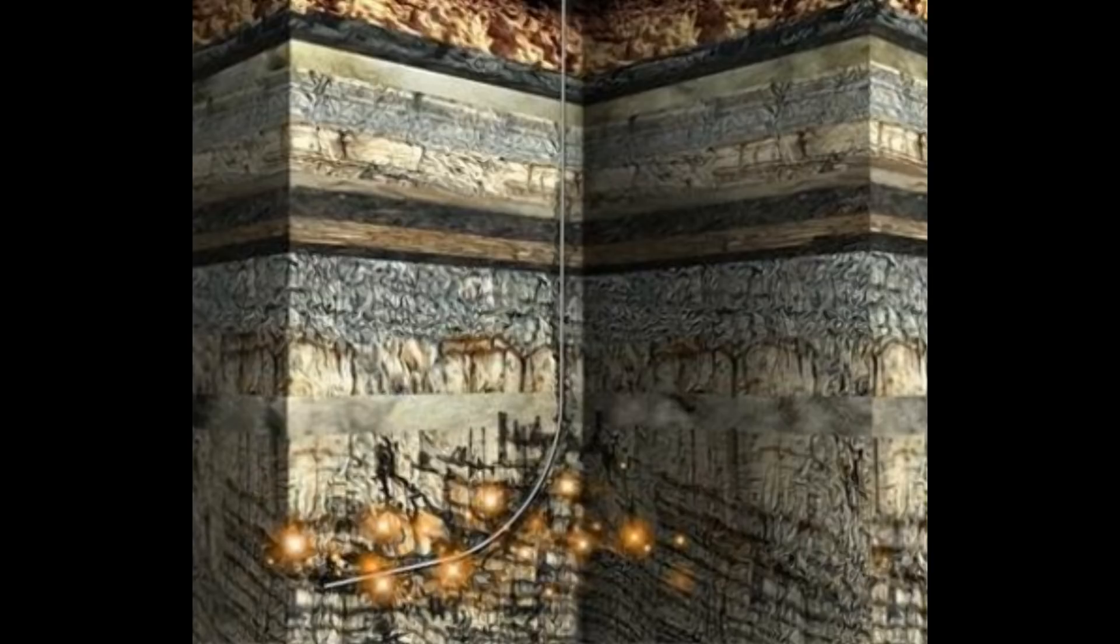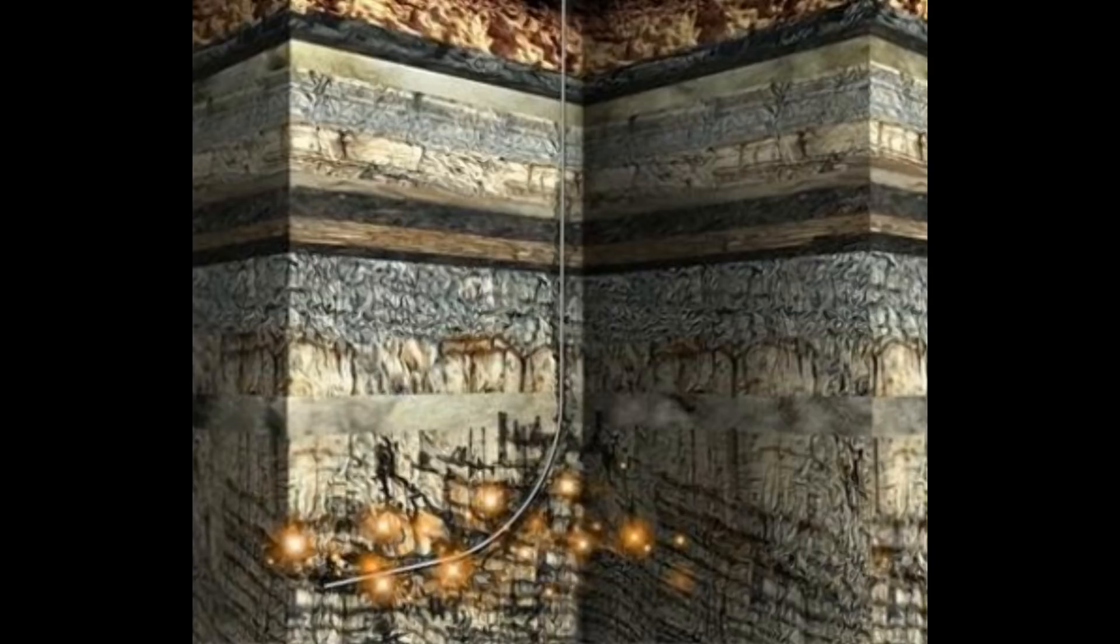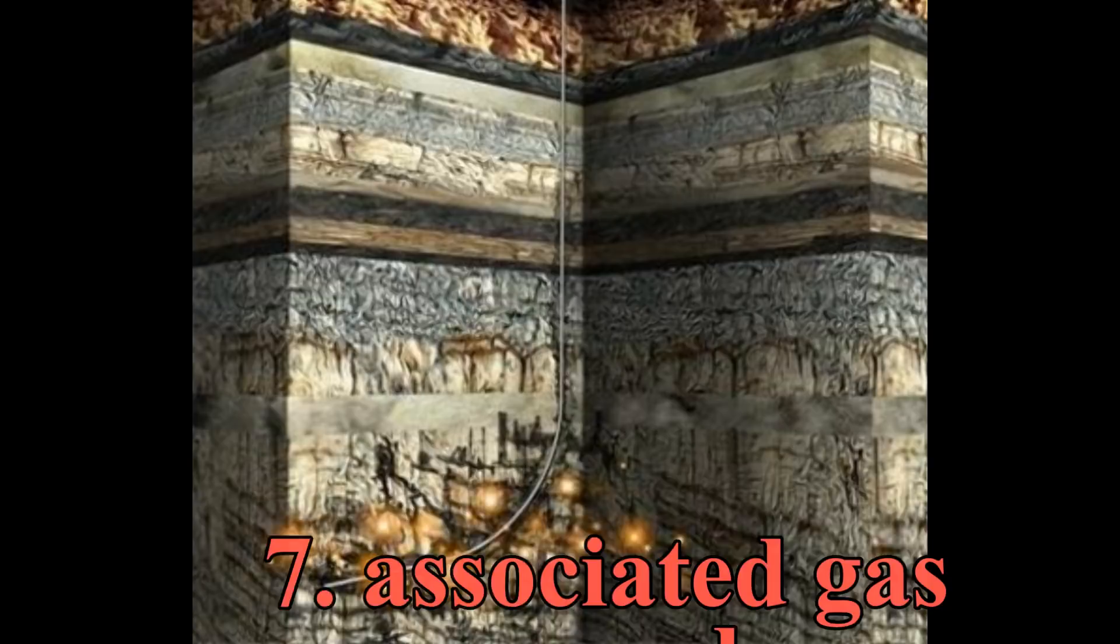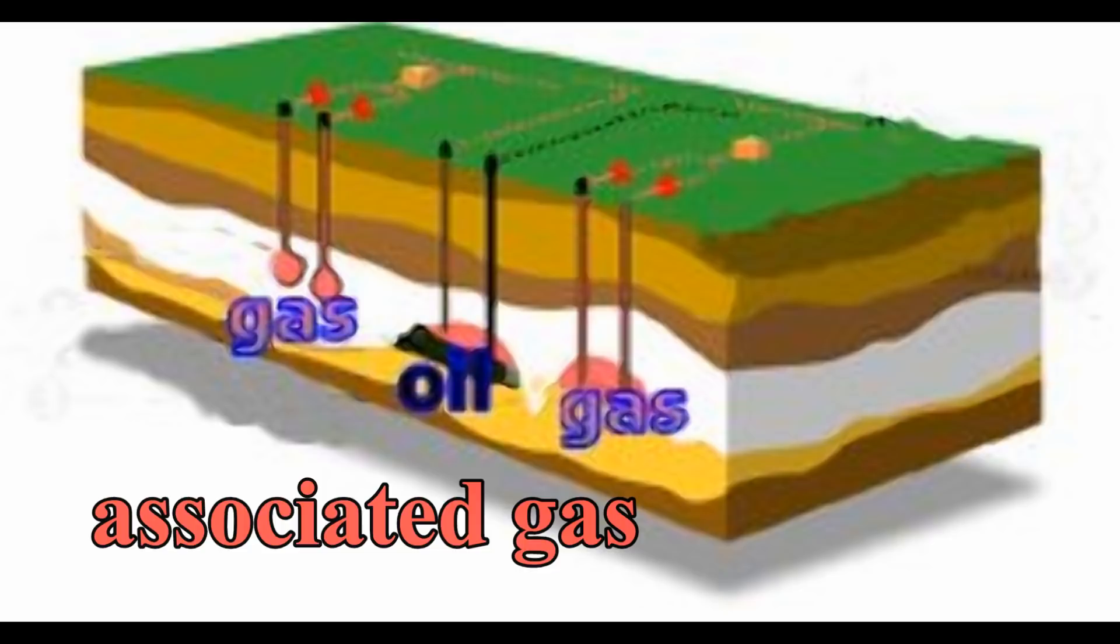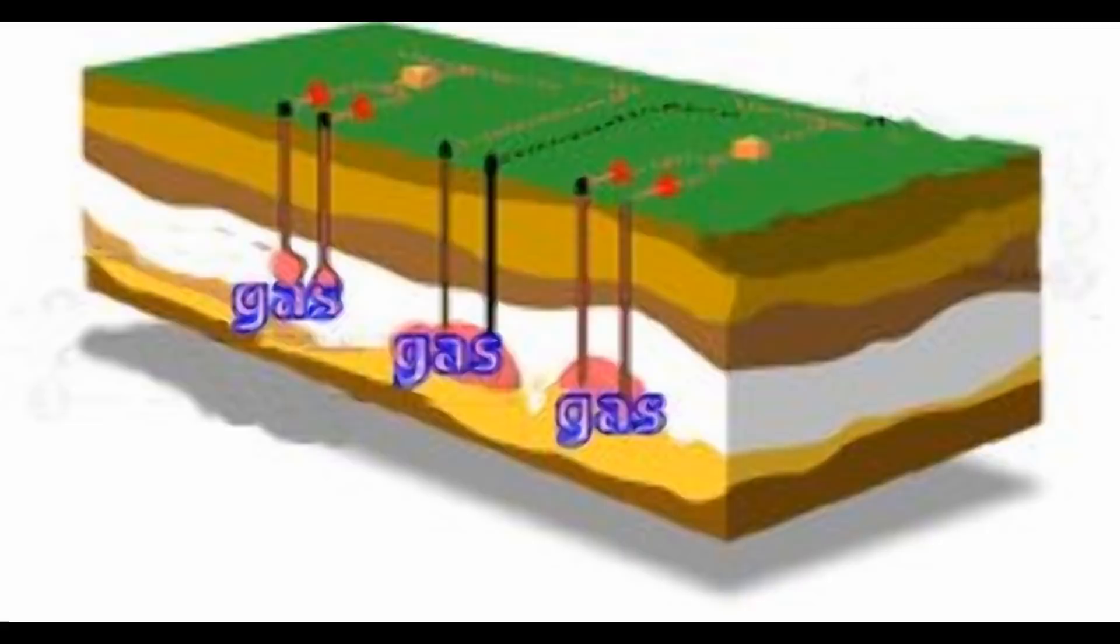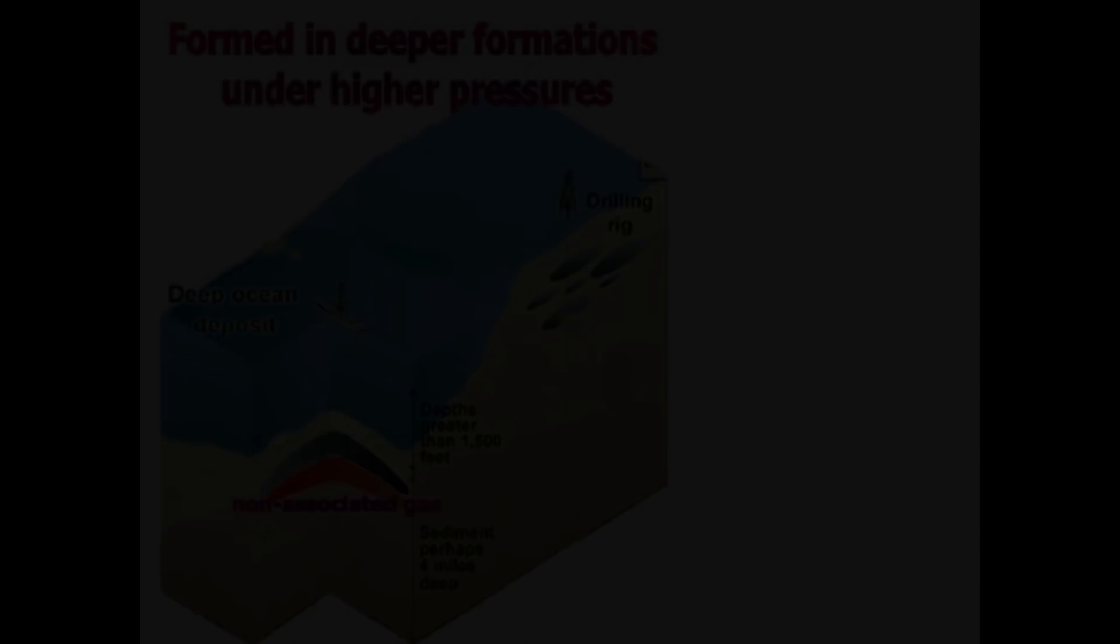The next important term is really two definitions, associated gas and non-associated gas. Associated gas means this gas is found where black oil is present. Non-associated means that only gas is present. In these reservoirs, without black oil, non-associated gas was formed in deeper formations where the source rock was usually at a higher temperature, causing the organic material to become overcooked, forming smaller gas molecules.